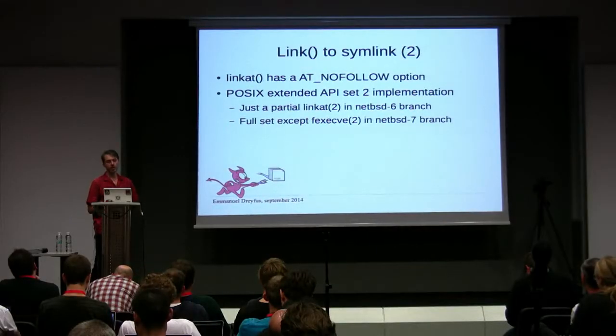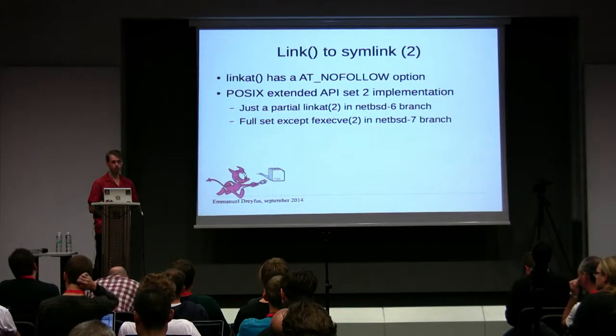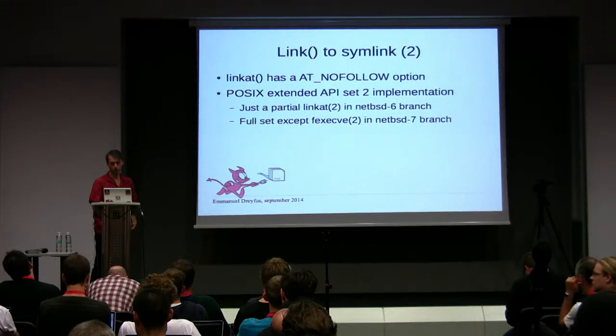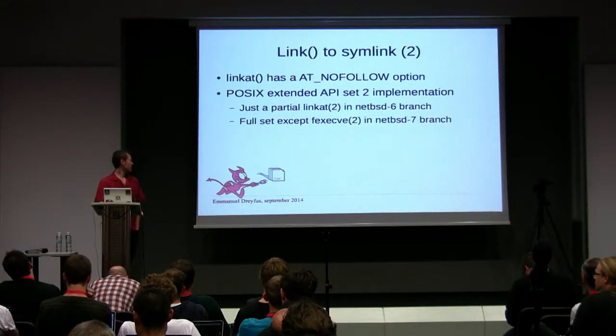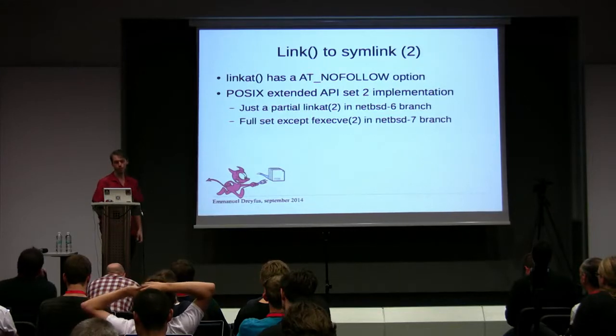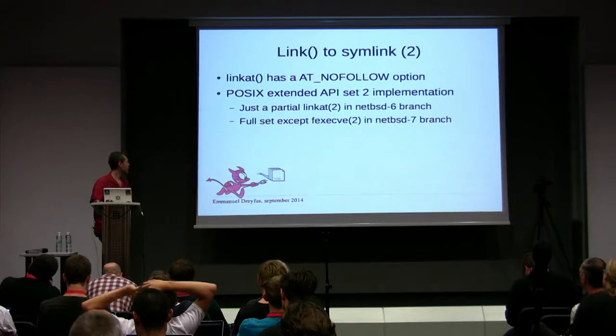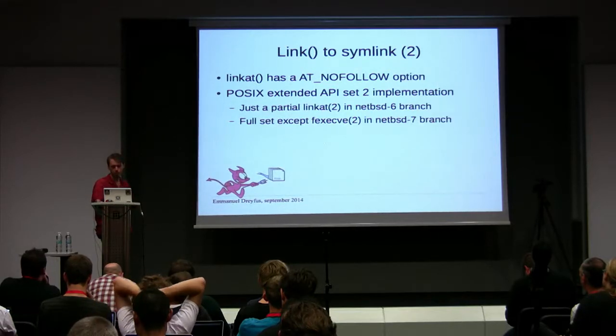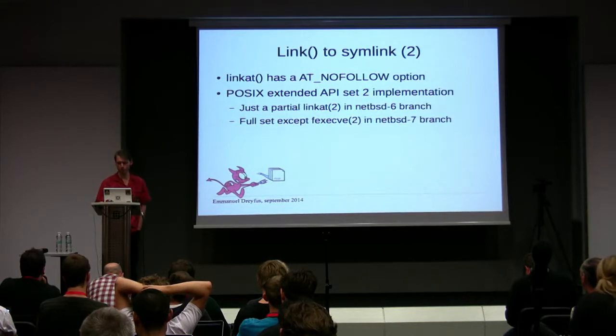The solution is to use linkat(), which is part of POSIX Extended API Set 2 — a family of new system calls that improve many things. linkat() is just like link() but with a flag that tells whether to follow the symlink or not. In the NetBSD 6 branch we only implemented a partial linkat() to support GlusterFS. Finally, in NetBSD 7 we have the whole Extended API Set 2, except fexecve(), which was not implemented because some people considered it unreasonable from a security perspective.